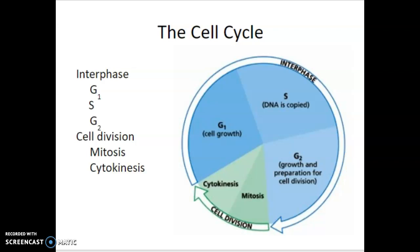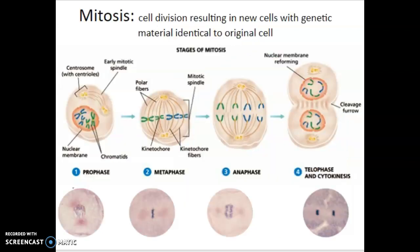After the G1, S, and G2 phases, the cell will enter mitosis. Mitosis takes a relatively short time, but there's a lot of action going on as far as the chromosomes are concerned. Mitosis is the division of the nucleus and the genetic material inside as part of cell division.